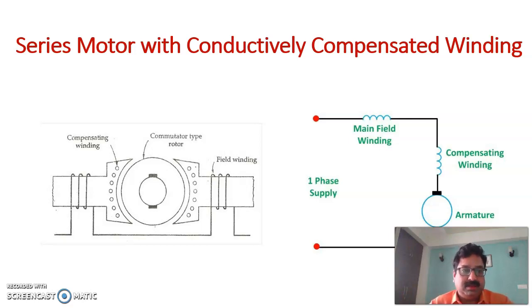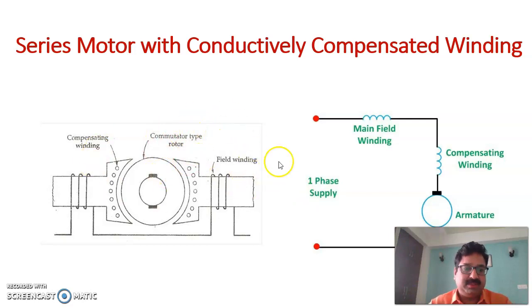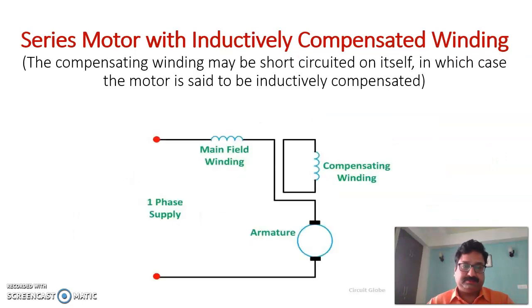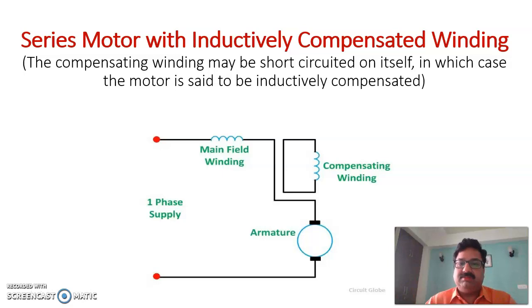A series motor with a compensating winding is shown in the diagram. You can see the main field winding and the armature. The compensating windings are there along with the commutator-type rotor and field windings — this is the universal motor with conductively compensated winding structure. Another option is inductively compensated windings. This can be obtained by short-circuiting the compensating winding on itself, in which case the motor is said to be inductively compensated. These are the two topologies: conductively compensated and inductively compensated.